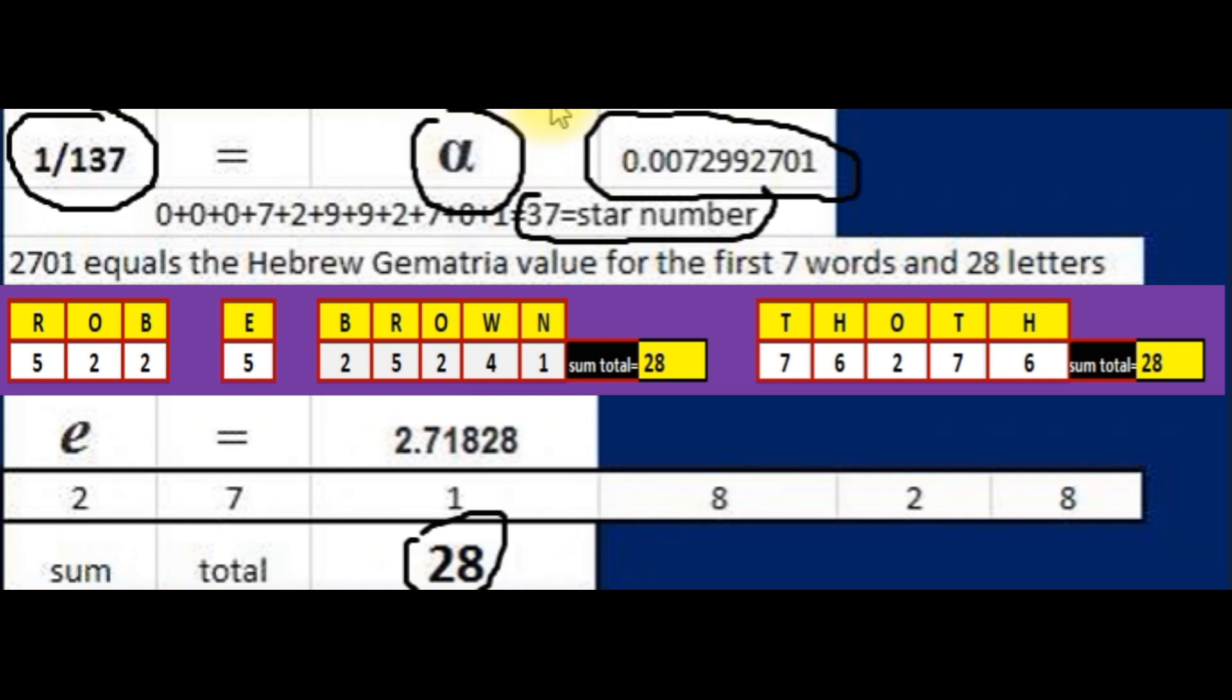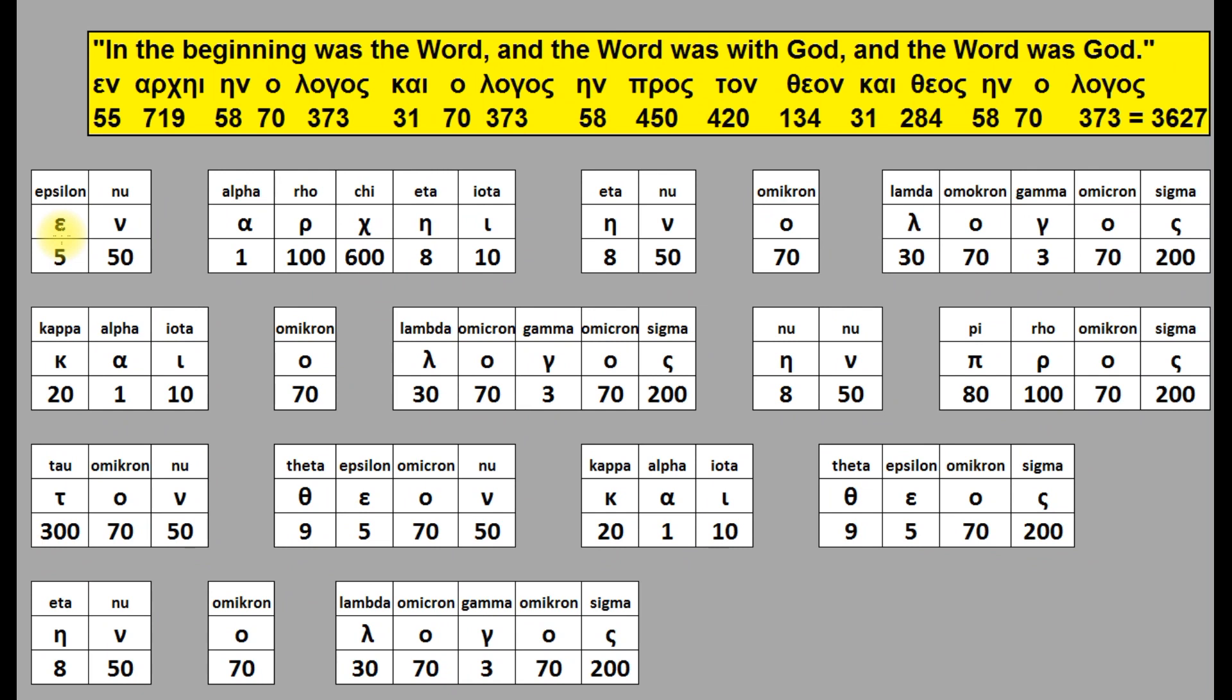In Greek, John 1:1, 'In the beginning was the Word, and the Word was with God, and the Word was God,' has a Greek sum total letter value of 3627.